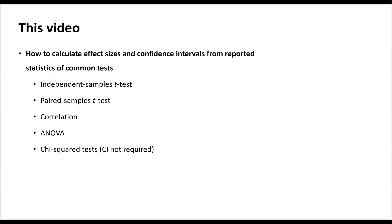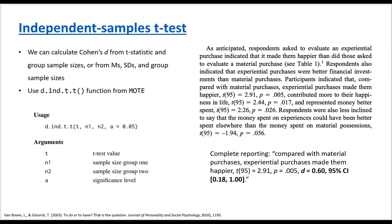In the replication and extension project that you will be doing as part of the course, you will be required to conduct power analysis based on the observed effect sizes in the target articles. It becomes very crucial to know how to calculate these effect sizes because many older articles do not report effect sizes and it's not straightforward to obtain them. In this tutorial, we will show you how to calculate effect sizes and confidence intervals from reported statistics. We will start with independent samples t-test.